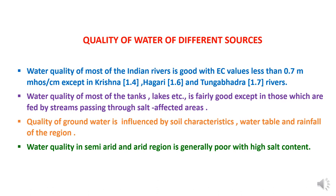Quality of different water sources. Rivers are generally having electrical conductivity less than 0.7, which is considered good, except rivers like Krishna where it is 1.4, Hagri river where EC is nearly 1.6, and Tungabhadra river where it is 1.7. In general, rivers are suitable for irrigation water. Water quality of tanks and lakes is fairly good, except if the stream is passing through salt-affected areas. Groundwater quality is influenced by soil characteristics like water table and rainfall of the region. In arid and semi-arid regions, groundwater quality is poor with high salt content.